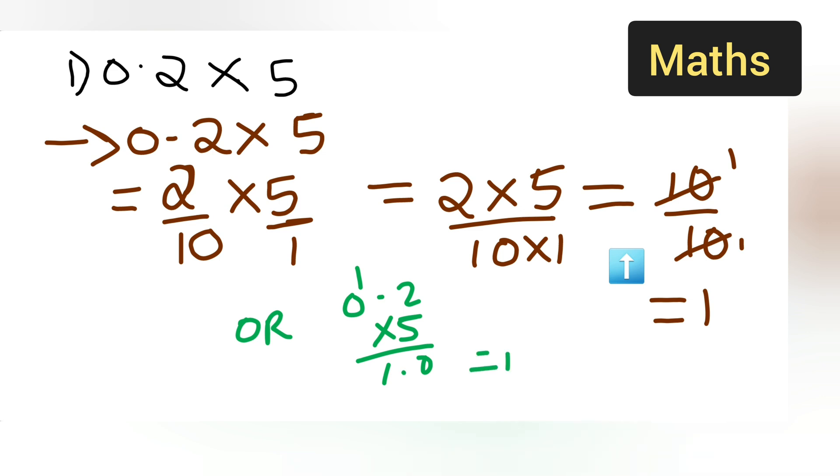I hope you all have understood how to multiply 0.2 multiplied by 5. Your final answer is 1. Thanks for watching.